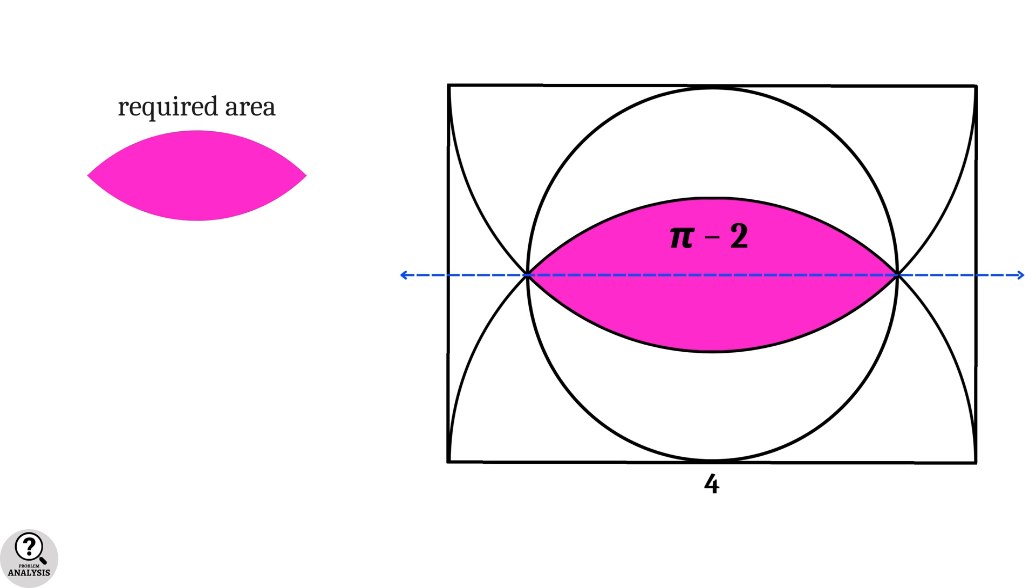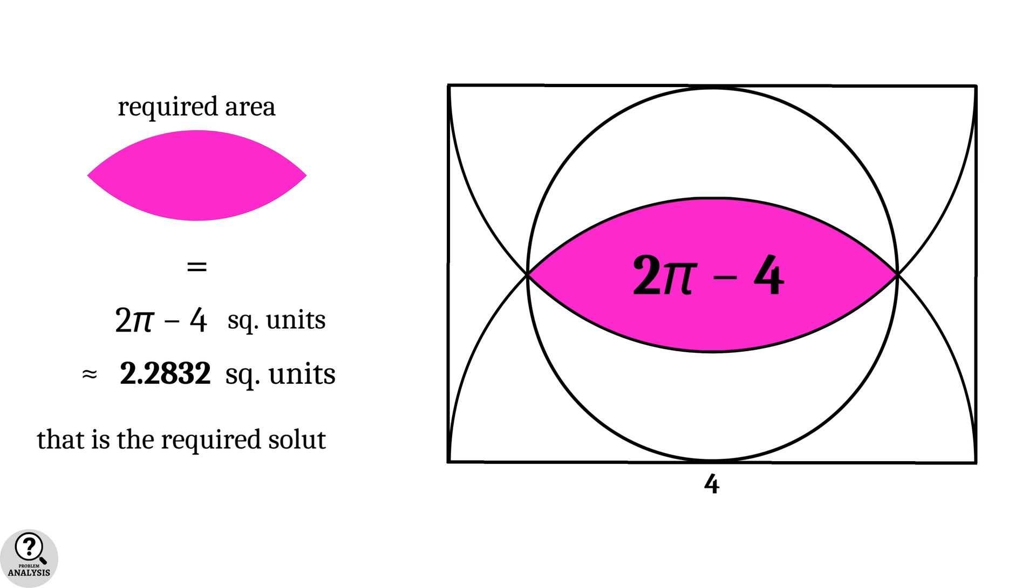Therefore, the required area of the entire pink color region is 2 times (π minus 2), that is equal to 2π minus 4 square units. This value is approximately equal to 2.2832 square units, and that is the solution we are looking for.